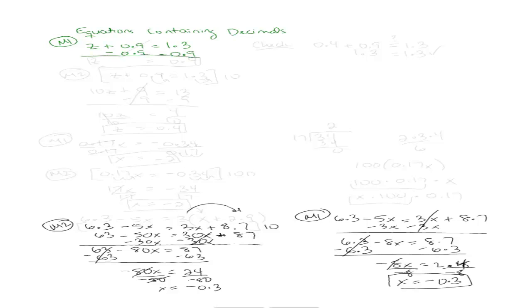If I do that, what ends up happening is I get z, the 0.9 and the negative 0.9 cancel out. So I'm left with z equals 1.3 minus 0.9. What's that? Okay.